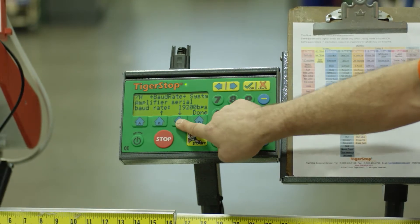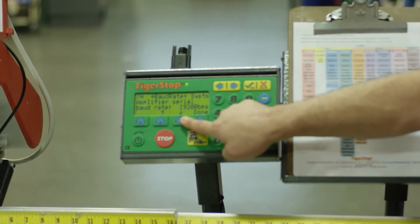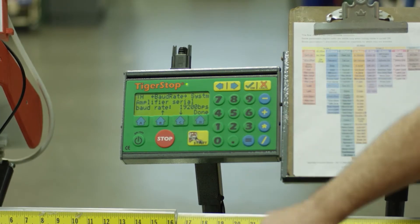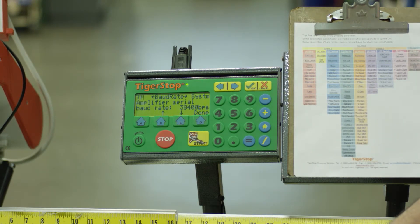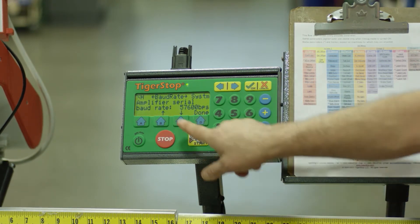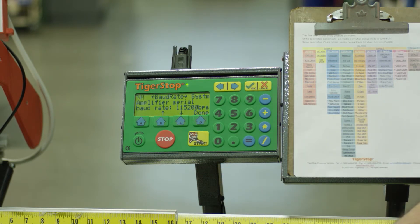I'm going to enter three for my password. And now you'll see it allow me to scroll through various baud rates available. We went from 9600 to 19,200. Pressing that button again, we're now at 38,400. And continuing on through to a maximum of 115,200.